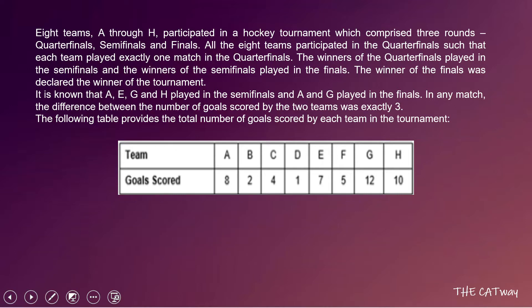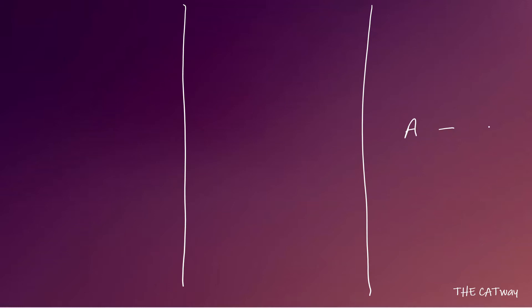We are going to make a basic layout based on the information given. We know the final is played between A and G. A, E, G, and H played the semi-finals, so E and H lost — meaning E and H played against A and G in some order. For the quarter-finals, since A, E, G, and H won their respective matches, B, C, D, and F all lost.